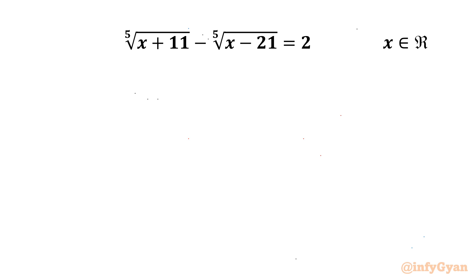Hello my dear friends, welcome back to Infigyan. In this video we have a very interesting question from radical equations: the 5th root of (x + 11) minus the 5th root of (x - 21) equals 2, and we are going to calculate the real solutions.